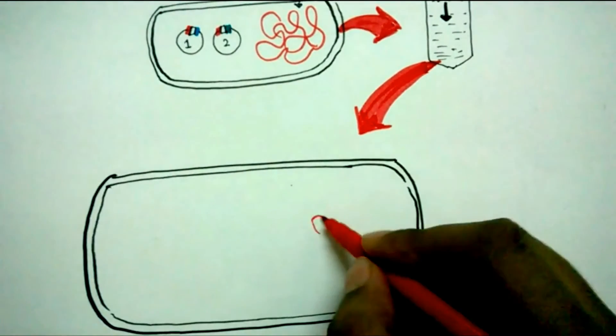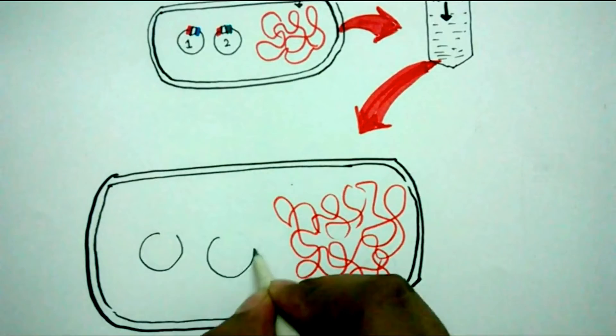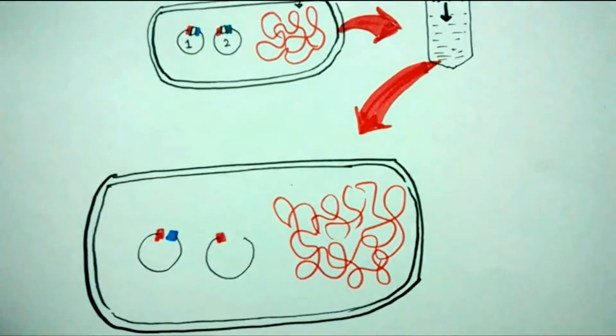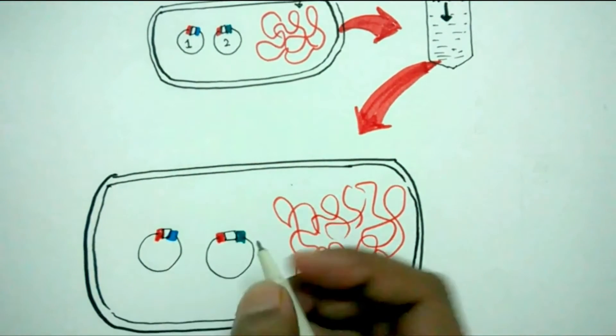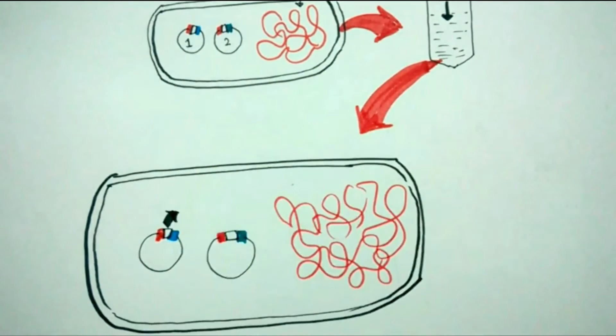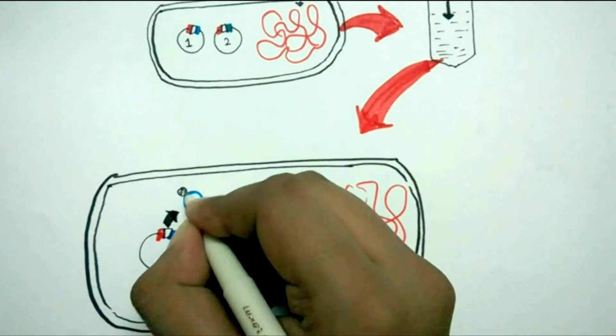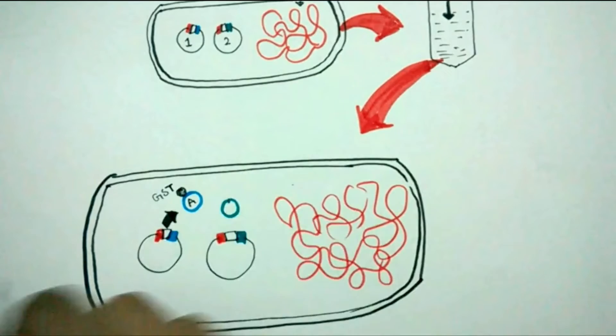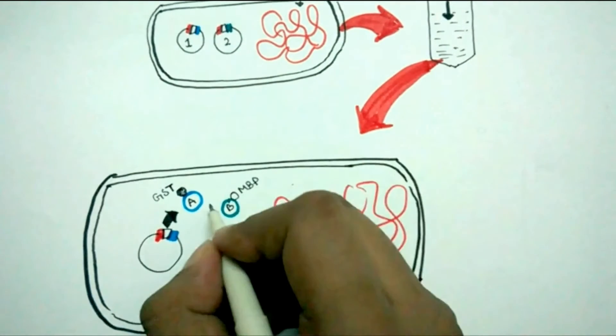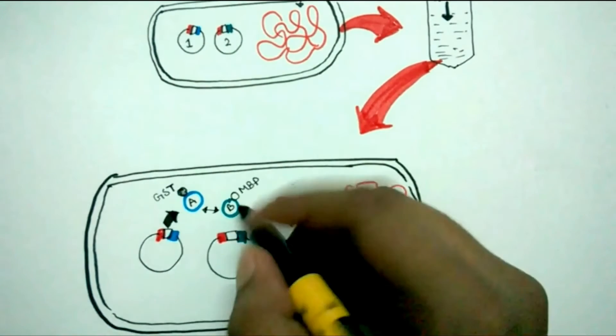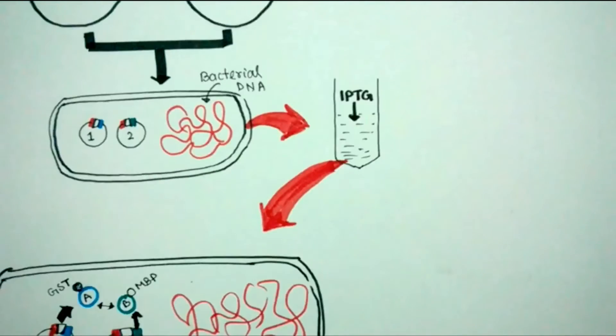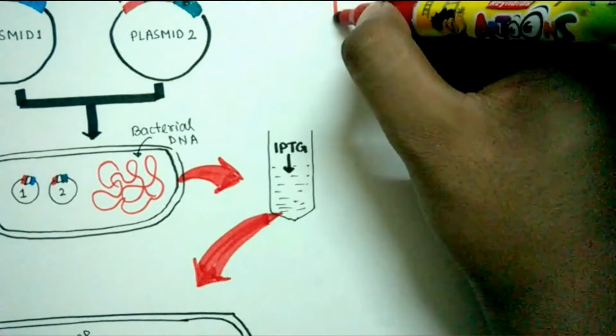This induces the lac Z promoter and helps express protein A and protein B. Protein A is produced with a GST tag and protein B has an MBP tag. The MBP tag is sometimes used to make the protein more soluble.